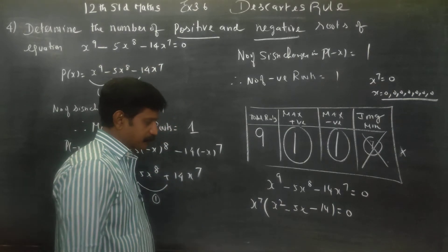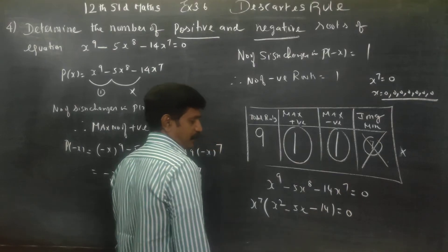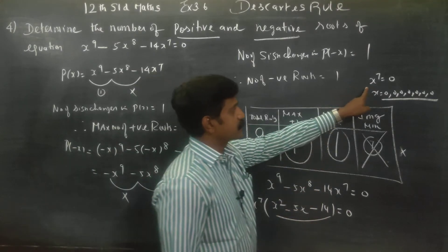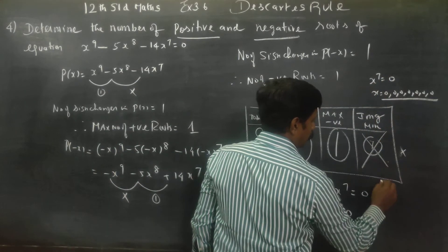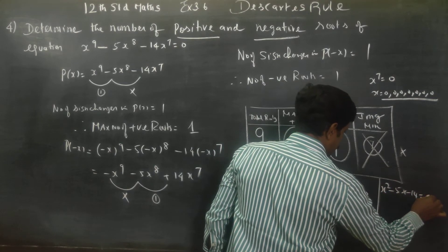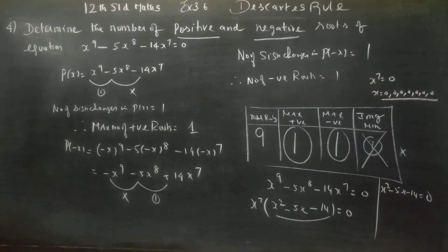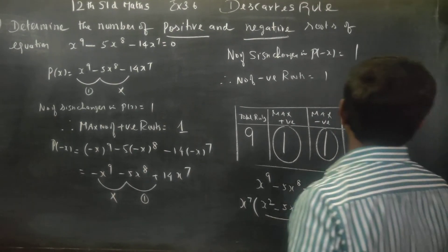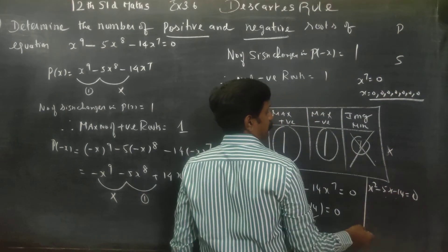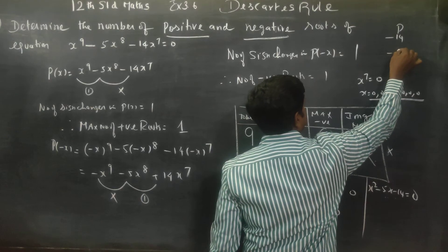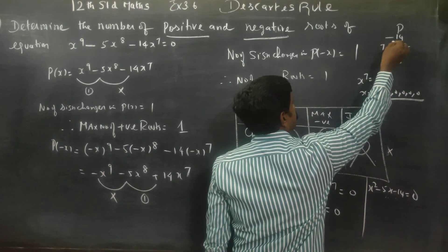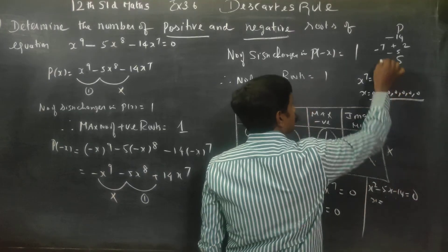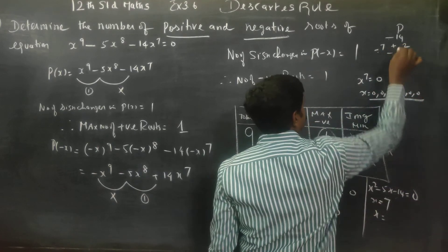Now for the balance: x squared minus 5x minus 14 equals 0. Using the product-sum method: product is minus 14, sum is minus 5. The factors are minus 7 and plus 2, since minus 7 times 2 equals minus 14 and minus 7 plus 2 equals minus 5. So x equals 7 or x equals minus 2.